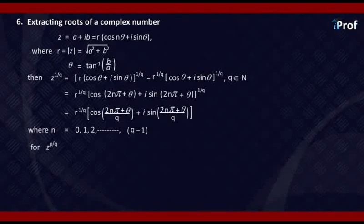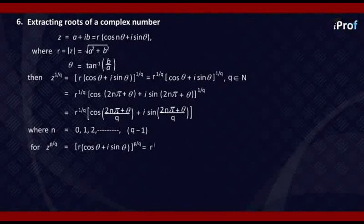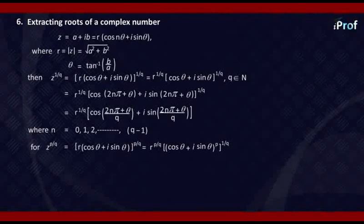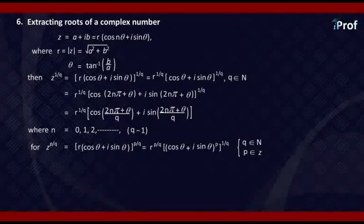Here what we do is, we put Z equal to R times cos theta plus i sine theta raised to power P by Q. Pulling out R, you get R raised to power P upon Q. The rest is cos theta plus i sine theta raised to power P by Q, which can be replaced by cos theta plus i sine theta raised to power P, whole raised to power 1 upon Q, where P is an integer and Q is a natural number.